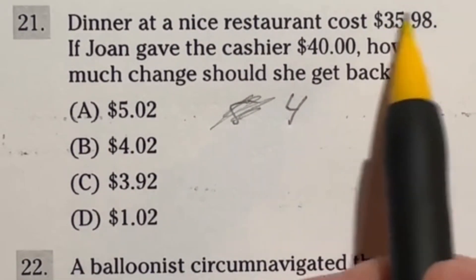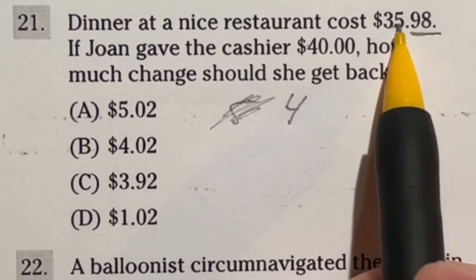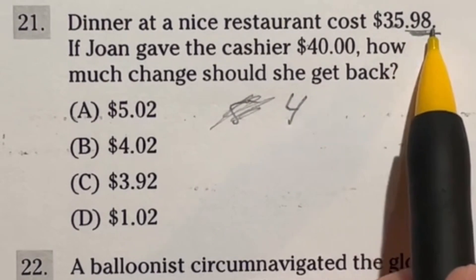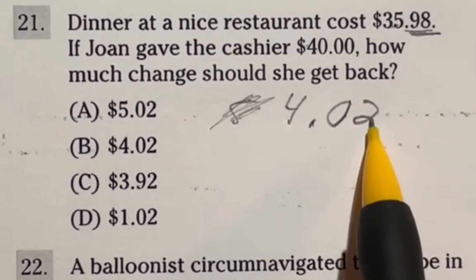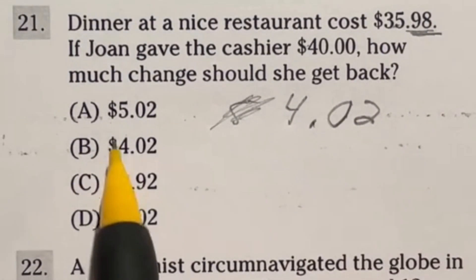So then the question comes down to, well, how much change is that? If we're looking here, it says $35.98. Well, how much more would I need to make this $0.98 into a whole dollar? You would need $0.02 more. So in this case, we're going to end up getting change back of $4.02. That means our answer should be B.